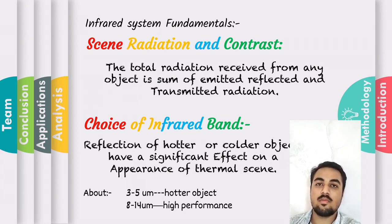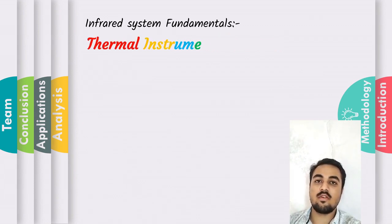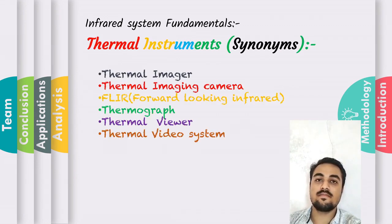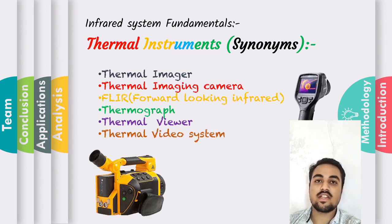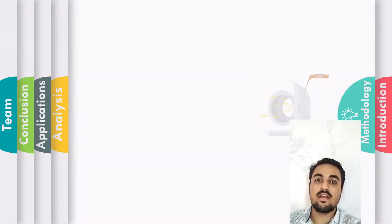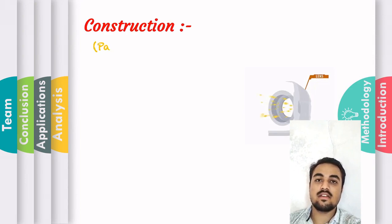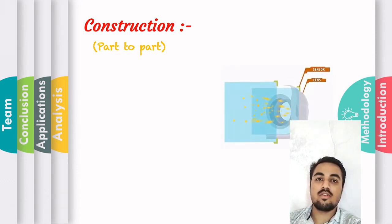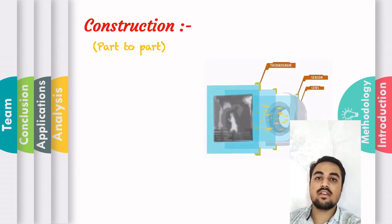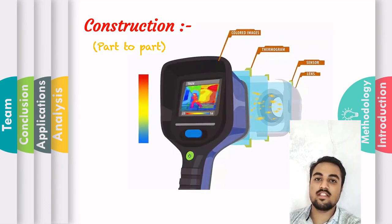There are various names for thermal instruments. Next is construction. The first component is the lens, which is used to capture infrared radiations. After that is the sensor, which is used to detect infrared energy. Next is the thermogram, which is used to measure the temperature of objects. Last is the screen, where the colored map of the temperature measured from the thermogram is displayed.